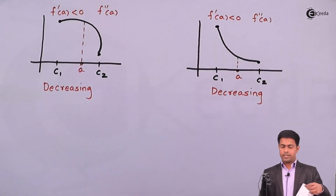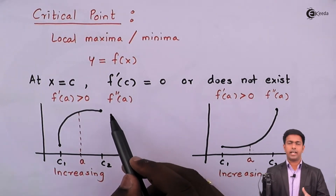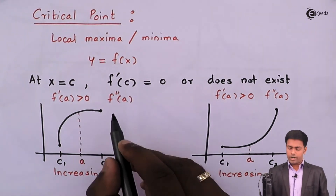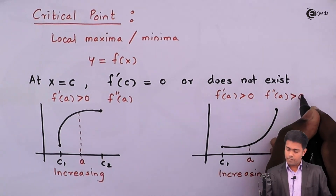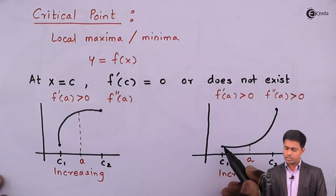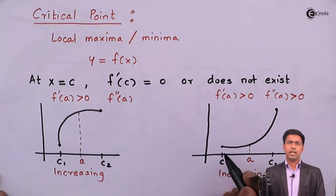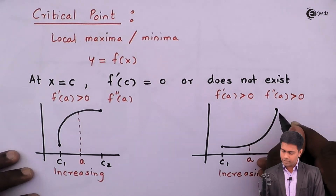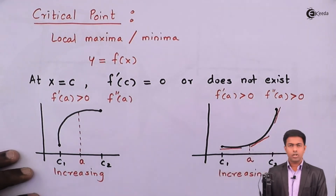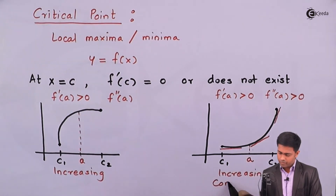Now let's consider the second derivative. Whenever the value of f''(a) is greater than zero, we say that the given curve is concave upwards. This means that if we draw a tangent at each and every point of this curve, all those tangents will lie under the curve.